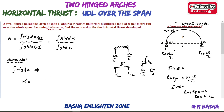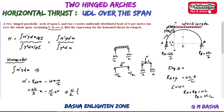The moment M-dash equals Ra into X minus W into X squared by 2. Substituting Ra equal to WL by 2: M-dash equals WL by 2 into X minus W by 2 into X squared. Simplifying by taking W by 2 and X as common factors, M-dash equals W by 2 times X times (L minus X).